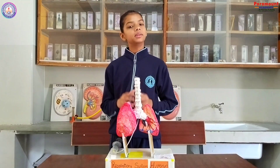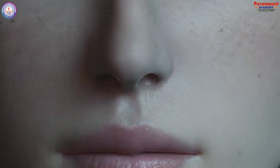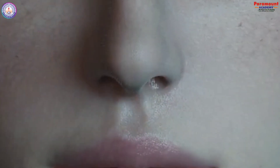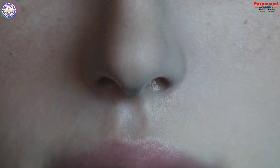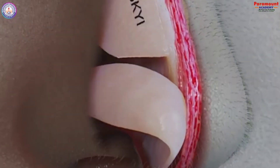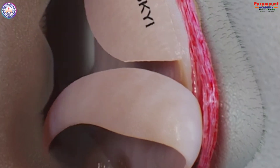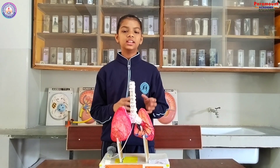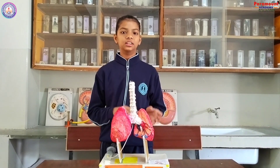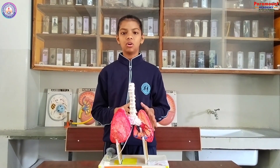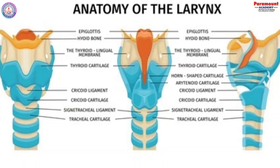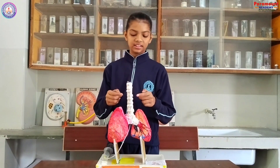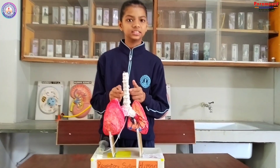Parts of the Human Respiratory System: Nose — it warms and humidifies air and captures dust particles. Larynx — it is used for vocal as well as respiration, and is also known as the voice box. Pharynx — it is a common passage for air. Trachea — it is covered with cartilage rings.